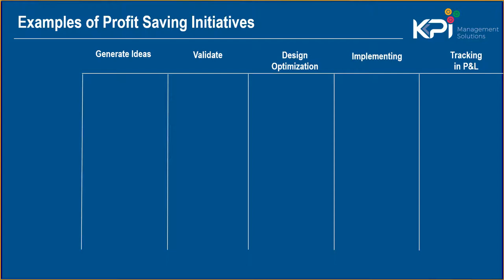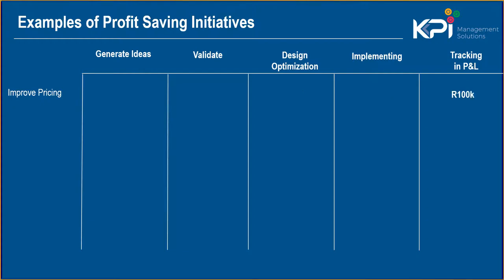Let's say we run a workshop and the business says we need to improve pricing — great, how much is that worth? We've got a hundred thousand here (this is South Africa, but it could be a hundred thousand dollars — it doesn't matter). We validate that 'improve pricing' project with some data, and then each week we track the progress until it reaches the P&L. We're only satisfied once it reaches the fifth level in the P&L.